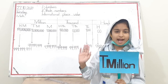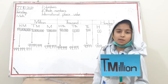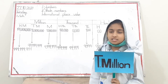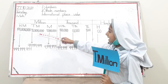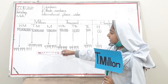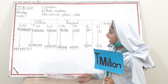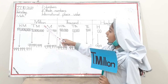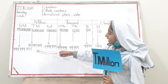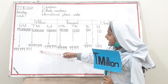Hi friends, I am ten million, a member of the million family. I show eight digits, for example ten million to ninety-nine million nine hundred ninety-nine thousand nine hundred and ninety-nine. My smallest number is ten million and my biggest number is ninety-nine million nine hundred ninety-nine thousand nine hundred and ninety-nine. Thanks.